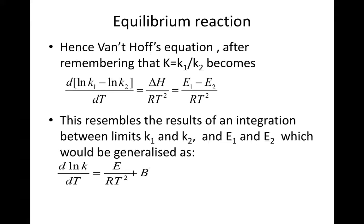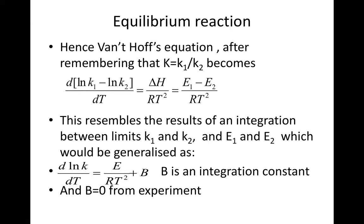This resembles the result of an integration between limits K1 and K2 and E1 and E2, which would be generalized as d natural log of K over dT is equal to E over RT squared plus B. Here B is an integration constant and B equals naught from experiment.